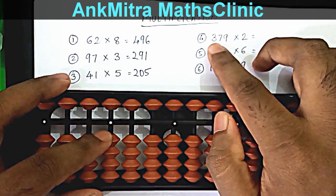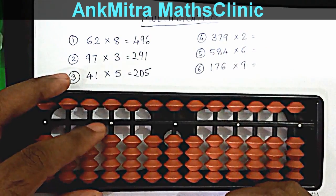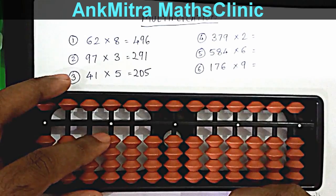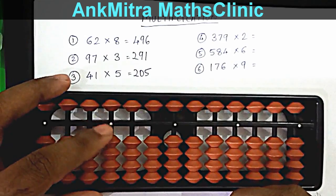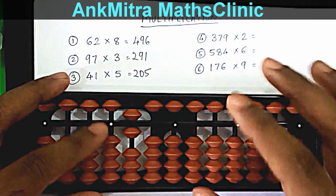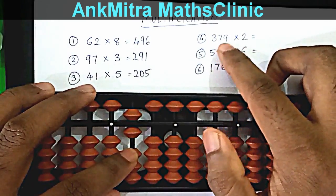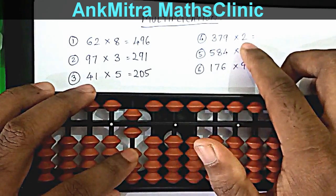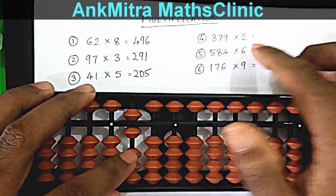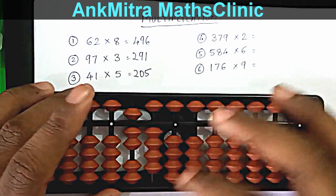From the fourth rod, start with the hundreds place digit: 3 multiplied by 2 is 6, but we read it as 06. So 0 on the fourth rod and 6 on the hundreds place. Then move one place to the right and find 7 times 2: 7 times 2 is 14, so add 1 and 4 from the hundreds place.